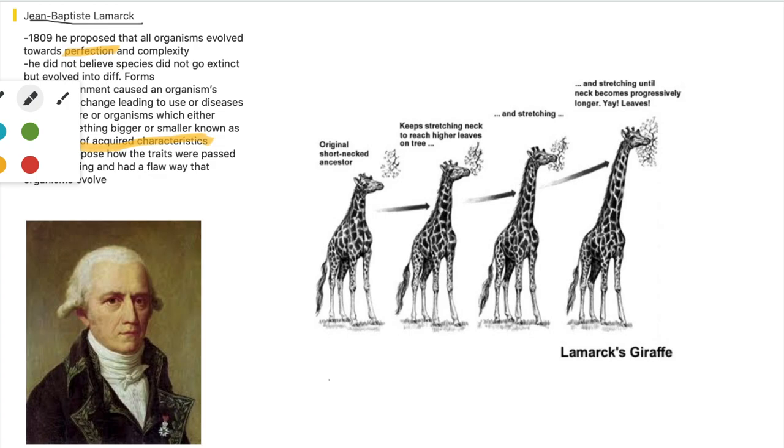This giraffe needs this food up here, this leaf, so it will grow its neck and grow and grow until at last it has gotten it. He did not propose how the traits would be passed off to offspring and he had a flawed way of thinking of how organisms evolved. So that would be all. Share, hit the like, and subscribe.